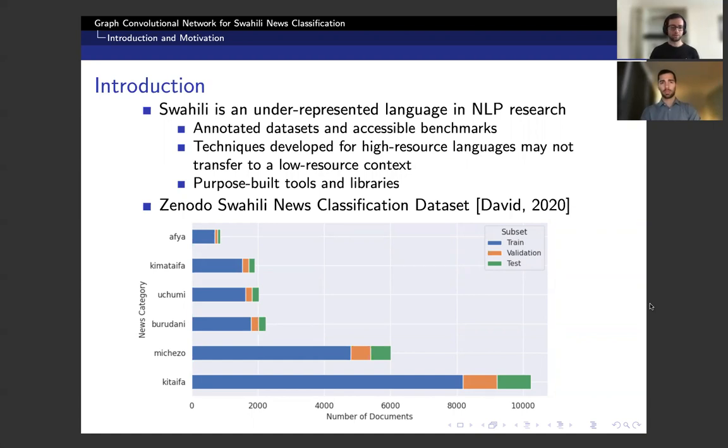In our work, we're looking at the Zenodo Swahili news classification dataset, which is a corpus of news pieces and articles where each article is labeled as one of six categories. You can see those categories on the y-axis of our figure, and the distribution of documents into each category is given on the x-axis. You can also see how we split the dataset into training, validation, and test sets by looking at our legend.